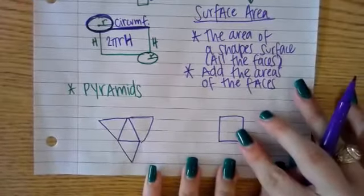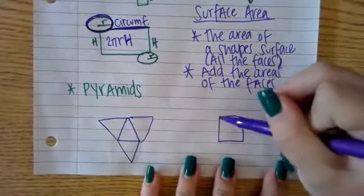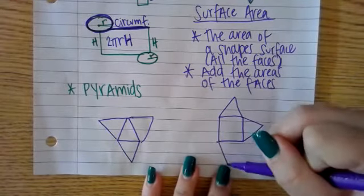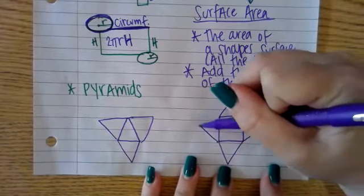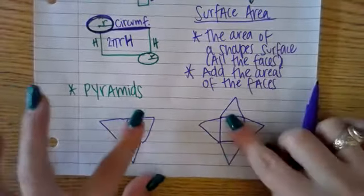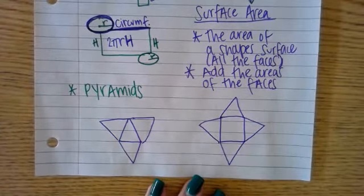And with a square-based pyramid, it's the same thing except we should have four triangles, because there are four sides or four faces on the side of a pyramid. All of these triangles should be equivalent to each other—they should all be the same size.